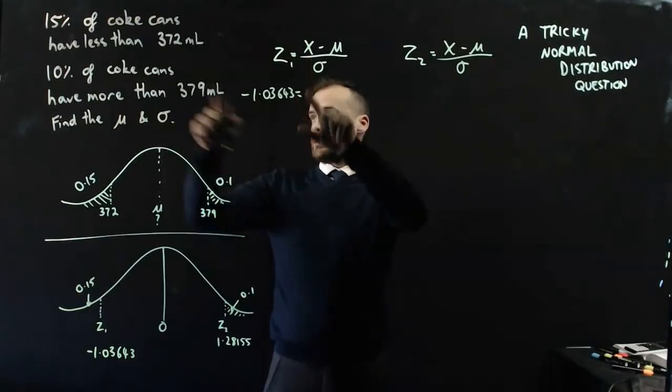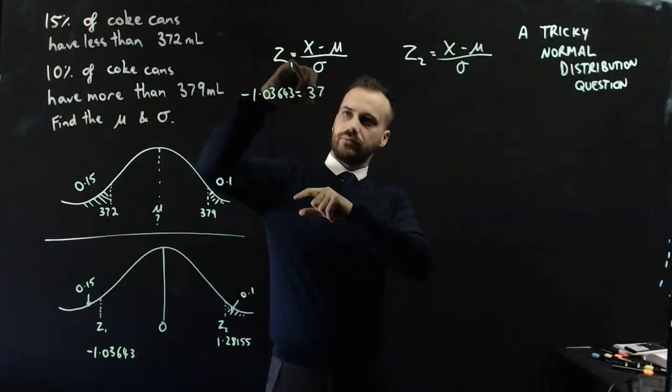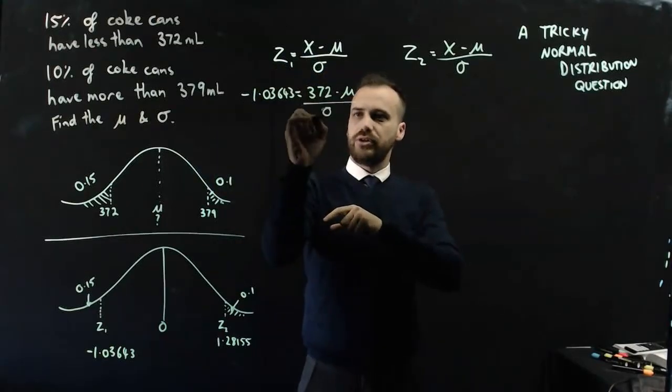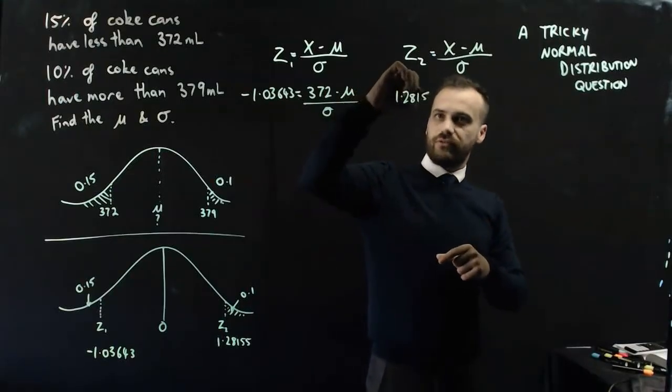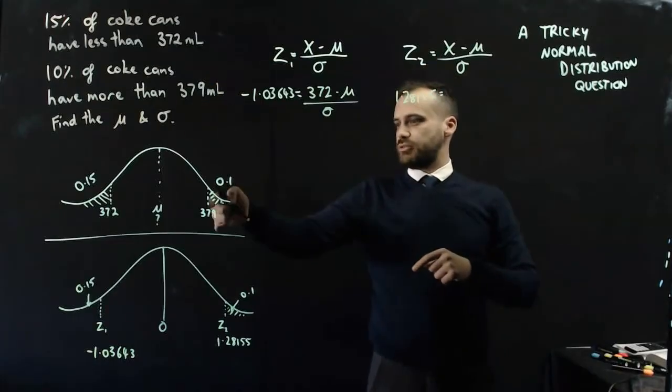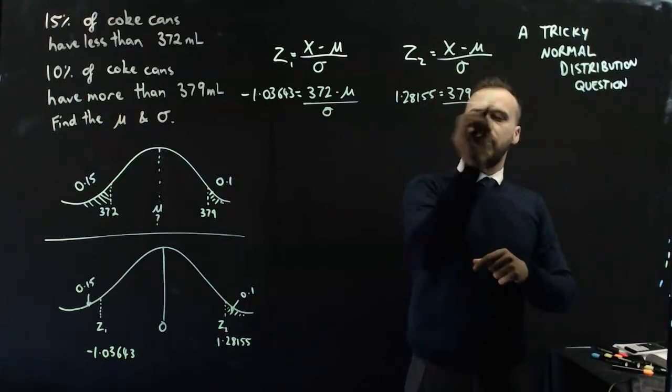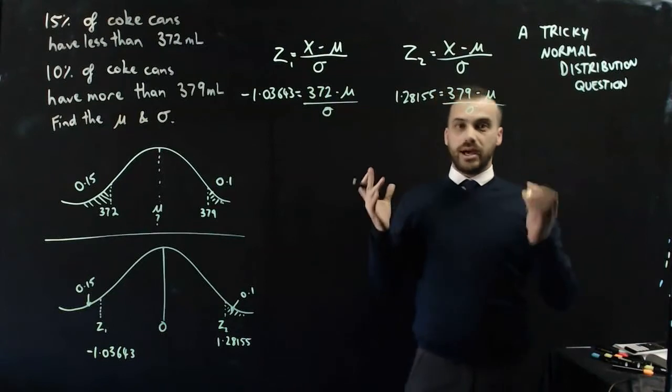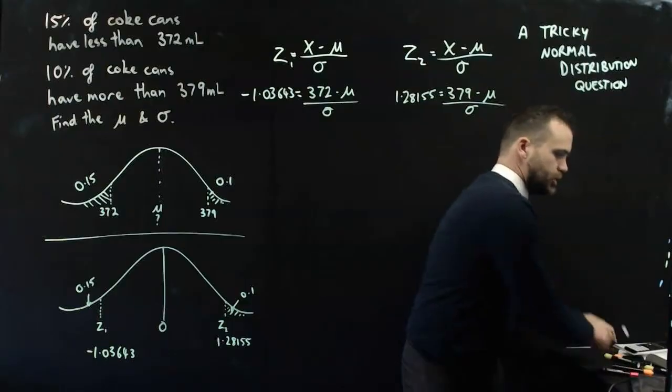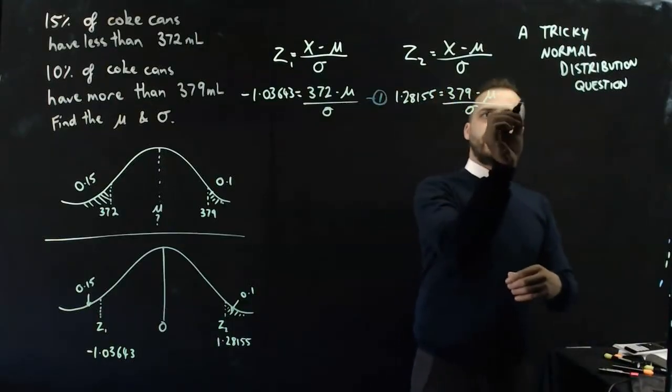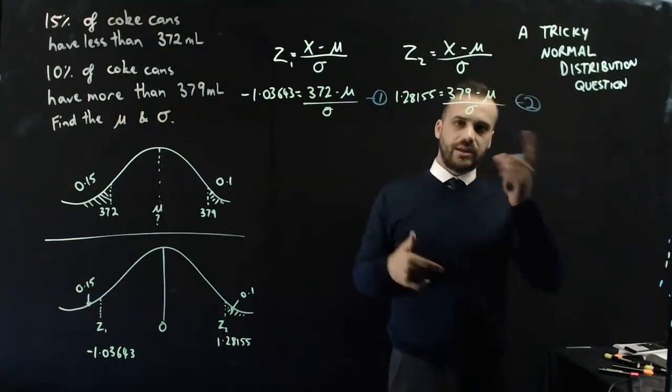I can now put in Z1 and Z2 into my equations. X is going to be 372, and I don't know the mean and I don't know the standard deviation. And this one, 1.28155 equals X, which is 379, minus the mean over the standard deviation. What I have is equation 1 and equation 2 and I can do some simultaneous equations to find the mean and the standard deviation.